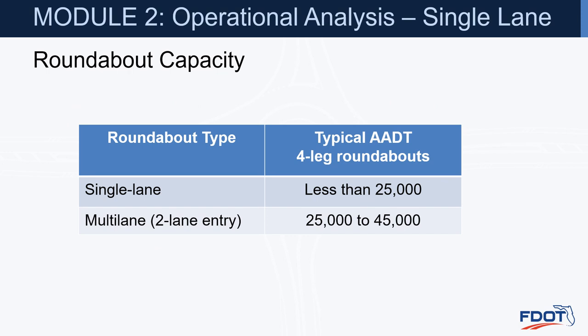This table shows the typical annual average daily traffic for a four-leg roundabout. Single-lane roundabouts typically can accommodate up to 25,000 vehicles, and a multi-lane or two-lane entry can accommodate up to 45,000 vehicles.